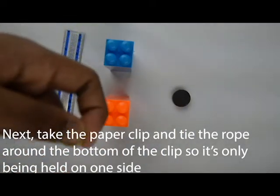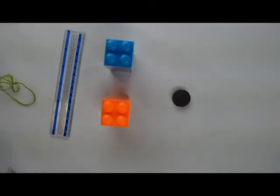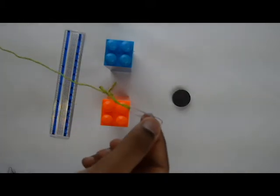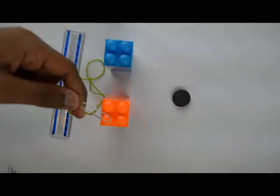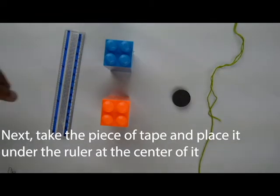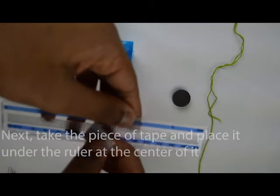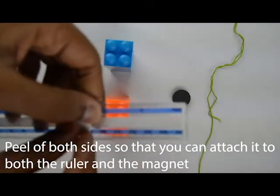Make sure the clip is being tied up and held on one end only. Then take the piece of tape that you acquired earlier and place it under the bottom of the ruler, and unstick both sides of it.